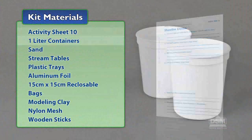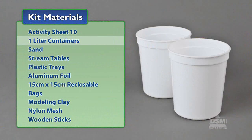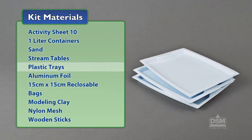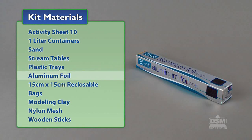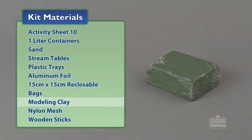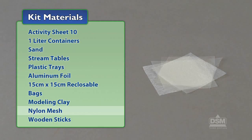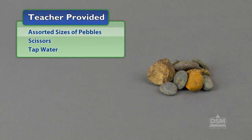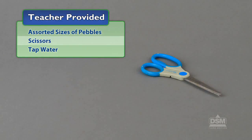You will need the following materials from the kit for Activity 10: 1 liter containers, sand, stream tables, plastic trays, aluminum foil, 15 cm x 15 cm reclosable bags, modeling clay, nylon mesh, and wooden sticks. You will also need to provide assorted sizes of pebbles, scissors, and tap water.